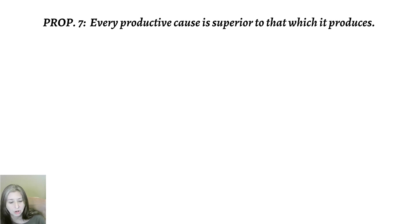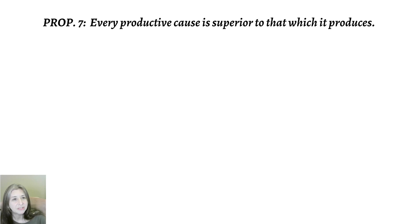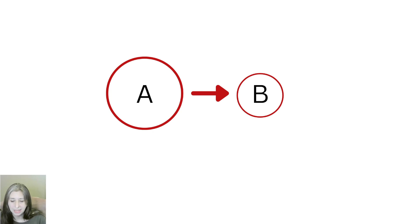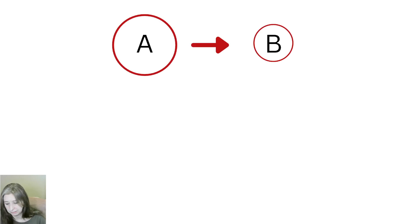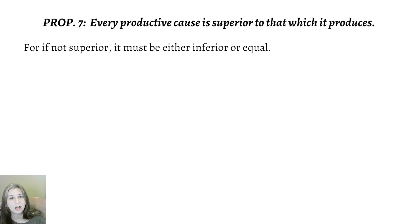Proposition 7 is introducing the idea of cause. We haven't yet talked about causes. Propositions 1 through 5 looked at the one and that which participates in it, but didn't yet talk about where those participants come from — what caused them. So Proposition 7 states that every productive cause is superior to that which it produces. Basically, A produces B, and he's stating that A must be superior to B. He argues by giving all logical possibilities and showing why only one can be true. So either A is superior to B, A is equal to B, or A is inferior to B — those are the only three possibilities logically.